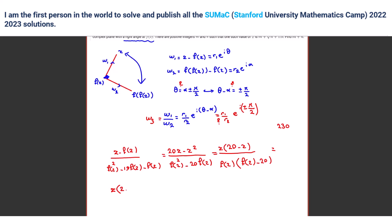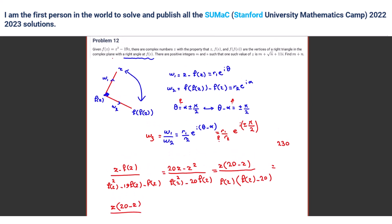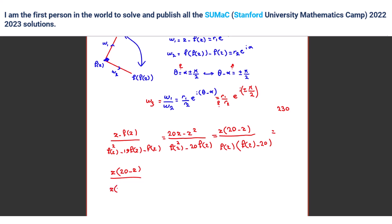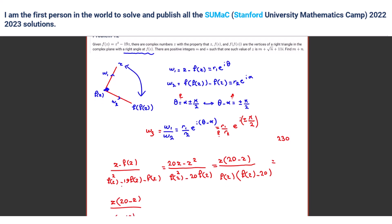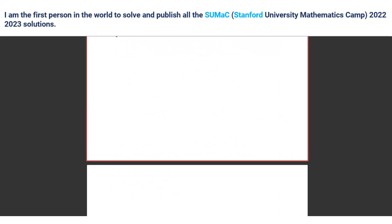So that gives us Z·(20 minus Z) over F(Z)·(F(Z) minus 20), which simplifies with Z² minus 19Z minus 20 giving factors (Z minus 20)(Z plus 1). We know Z is not 0 because if Z is 0 all of them would be 0 — there's no angle and they cannot form a triangle.